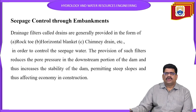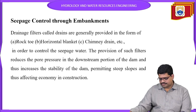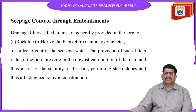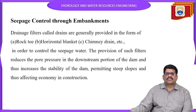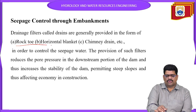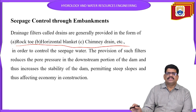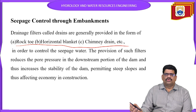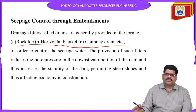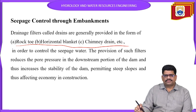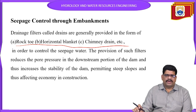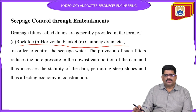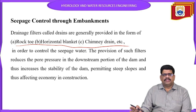Seepage control through the embankment dams. Seepage can be controlled by rock toe, horizontal blanket, and chimney drains. These three are the main methods to control seepage. Drainage facilities and filters provided on the upstream and downstream sides allow water to be removed from inside. Wet conditions can be removed and water can come out through the drains — this is very important for maintaining the dam over the long term.